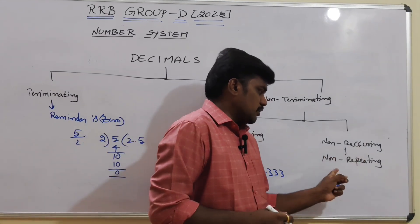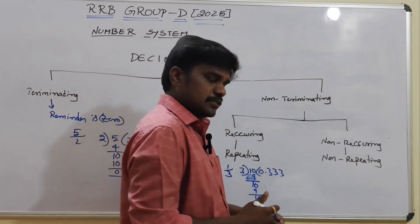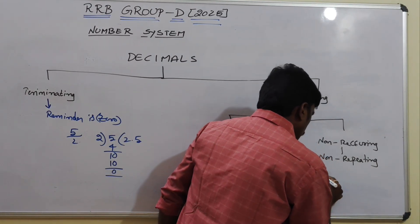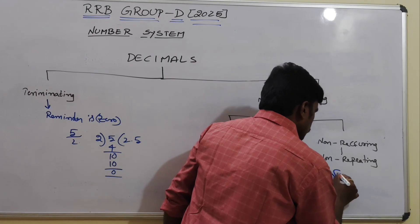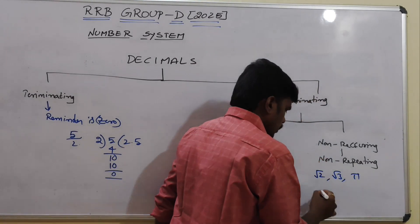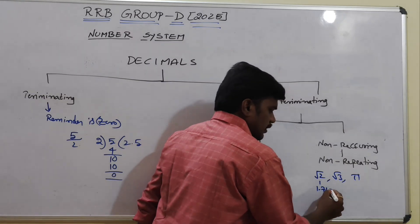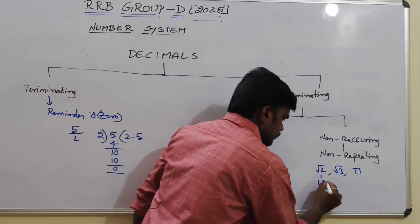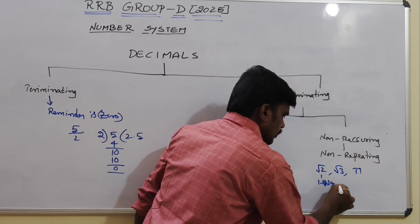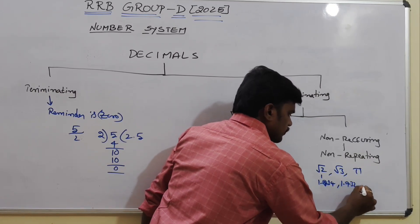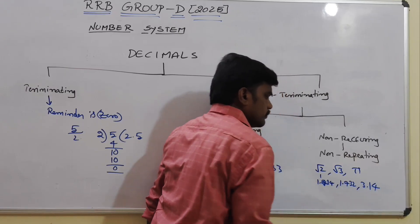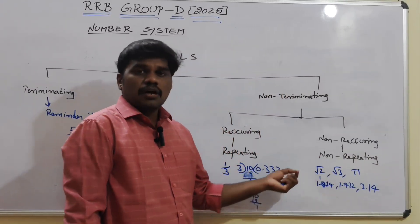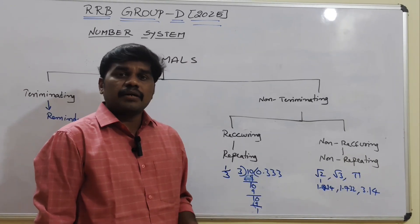Non-recurring means non-repeating numbers. For example, root 2 is 1.414, root 3 is 1.732, and pi is 3.14. These are called non-repeating numbers — they do not repeat in a pattern.